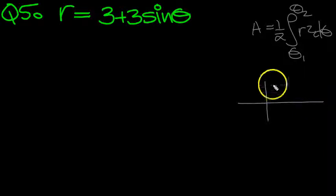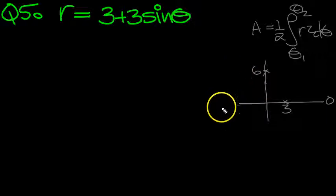So we start at 0. When we put 0 in we get 3. So that's going to be here, and that's theta equals 0, and that's the value 3. Then if we go around to pi over 2 we get the value 6. And then if we go around here to pi we get 3 again. So we'll get that shape.